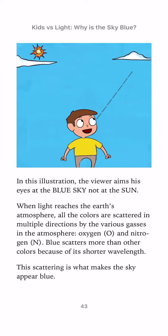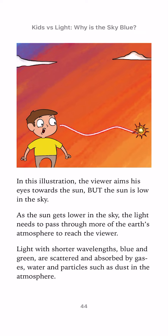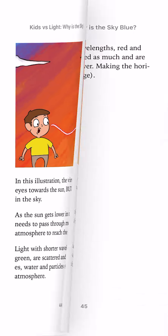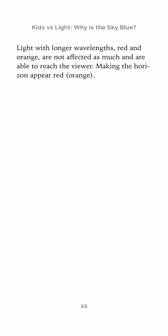In this illustration, the viewer aims his eyes towards the Sun, but the Sun is low in the sky. As the Sun gets lower, the light needs to pass through more of the Earth's atmosphere to reach the viewer. Light with shorter wavelengths — blue and green — are scattered and absorbed by gases, water, and particles such as dust in the atmosphere. Light with longer wavelengths — red and orange — are not affected as much and are able to reach the viewer, making the horizon appear red and orange.